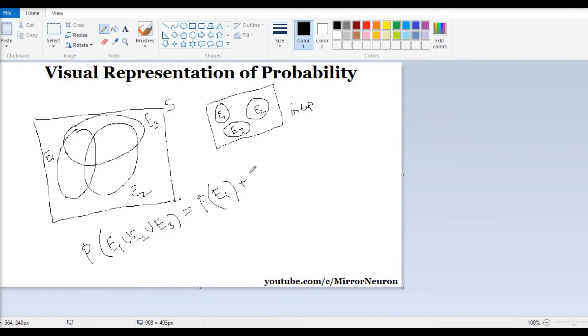So it will be P(E1), probability of E2, and probability of E3. Then we know that between E1 and E2 this is the common area that I have to subtract. Same goes with E2 and E3—this is the common area that I have to subtract. And same goes with E1 and E3—this is the common area that I have to subtract.